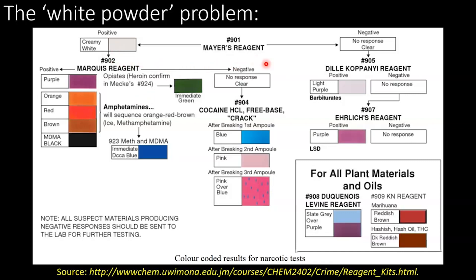Conversely, if you don't get a colour from the Marquis reagent — a negative response — then we move down to another presumptive test targeting the various forms of cocaine. Going back to the beginning, if we got a negative result from Mayer's reagent, we could then try the Duquenois-Levine reagent, which could give a faint colouration suggesting barbiturates, or with a negative result you can move on to Ehrlich's reagent, which is a test for hallucinogens like LSD. So we have multiple different presumptive tests and it's kind of like a choose your own adventure, whereby the different colourations inform you of what class of drug you may have.